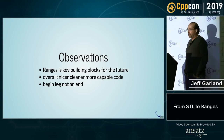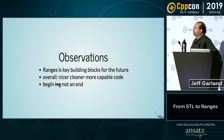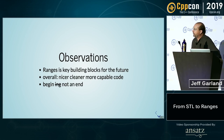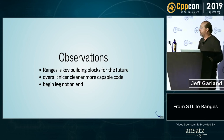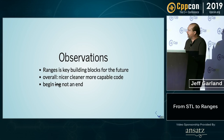My reflection on this is that ranges is a key building block for the future. Even if it was just getting rid of begin and end, we're going to see a lot nicer, cleaner, more interesting code. We didn't see all of Range V3, which is a very large library, make it into C++20, but I think we saw the core — the kernel part that we need to move things forward. Thank you — we have some time for questions.